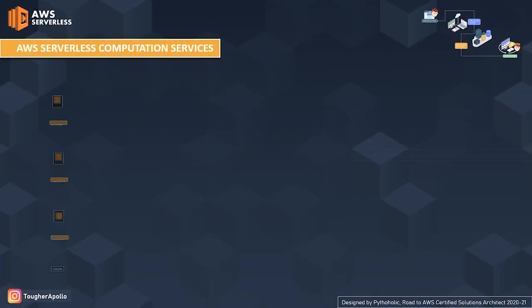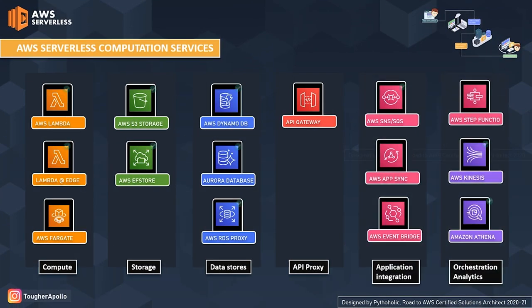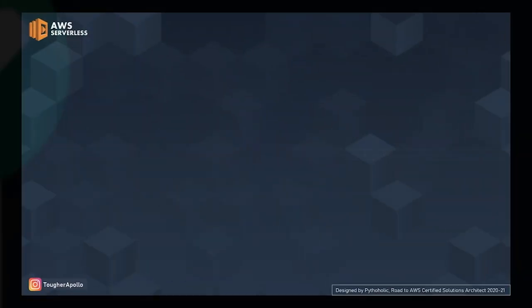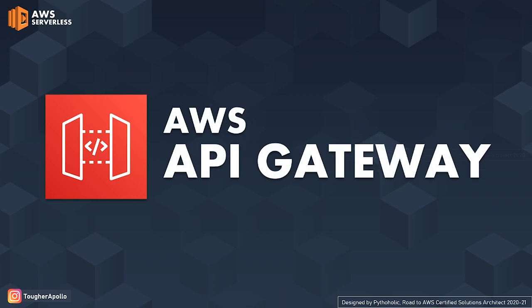Talking about amazing things, let's jump onto the roadmap that we have for our AWS serverless. We've already covered AWS Lambda and AWS Lambda at Edge, so if you haven't seen those videos, please watch them. Now it's time to start with the most requested topic on this channel for AWS — it's time to talk about AWS API Gateways. If you're ready, let's begin.